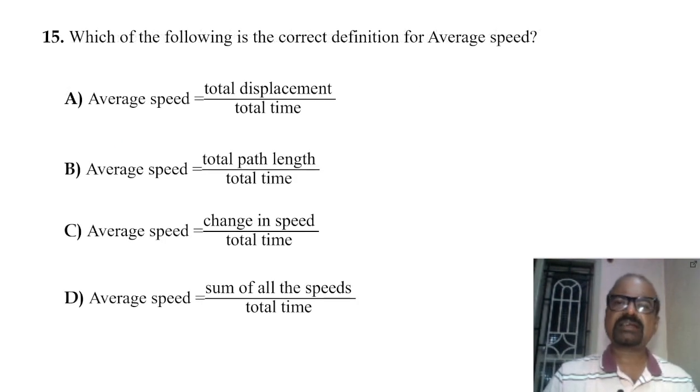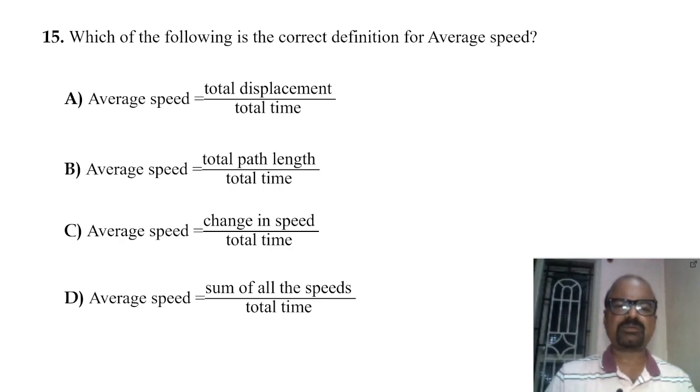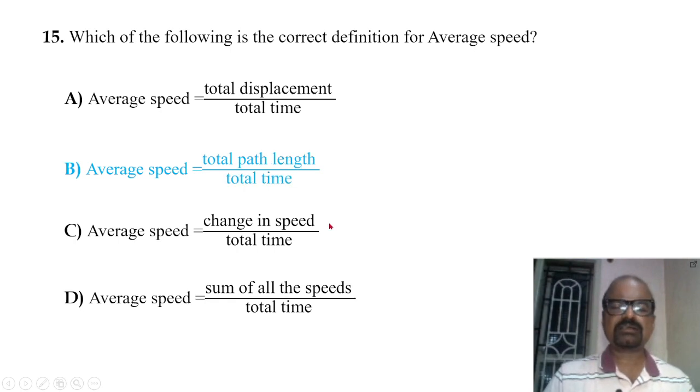Which of the following is the correct definition for average speed? Average speed is the total path length divided by the total time taken. That is the correct answer.